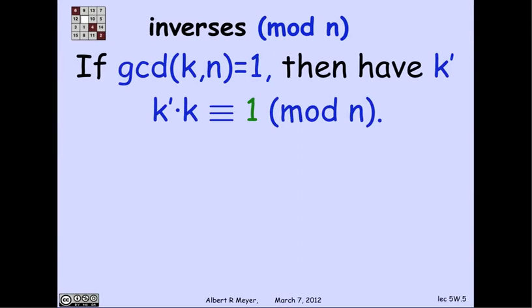So the proof of that is based on the following idea. Let's say that a number k prime is an inverse of k mod n if k prime times k is congruent to 1 mod n. So k prime is like 1 over k with respect to mod n. But of course, 1 over k is going to be a fraction unless k is 1. And so k prime is going to be an integer that simply acts like 1 over k.